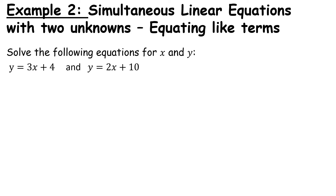Now let's look at a different method: equating like terms. Look at our equations: y equals 3x plus 4 and y equals 2x plus 10. We could use elimination here, but notice both equations are given as y equals something. If y equals 3x plus 4 and y also equals 2x plus 10, then by logical reasoning 3x plus 4 must also equal 2x plus 10. This is equating like terms — equating the y expressions from each equation.